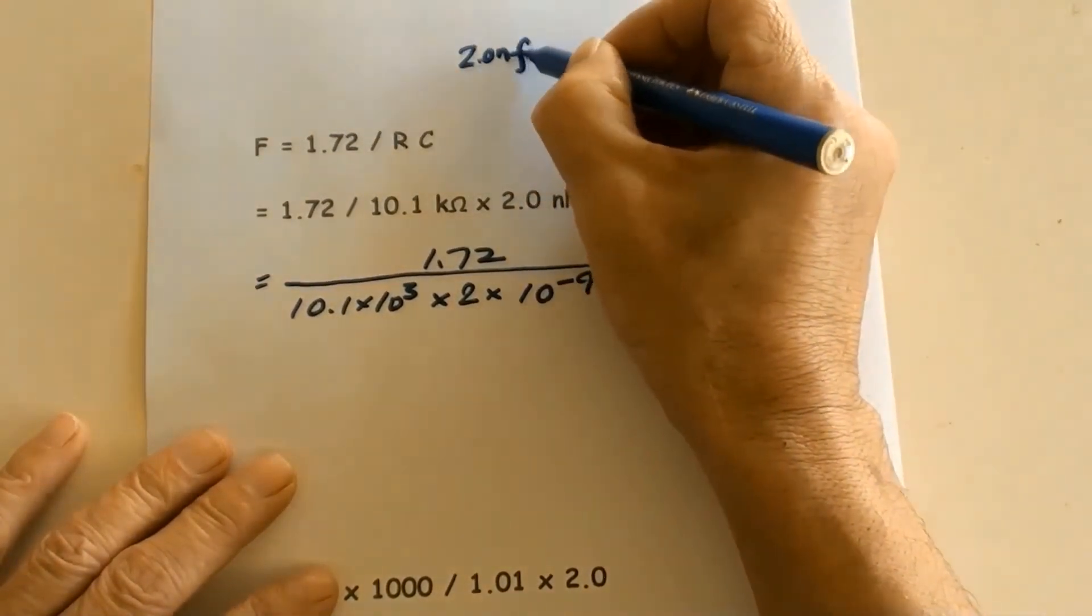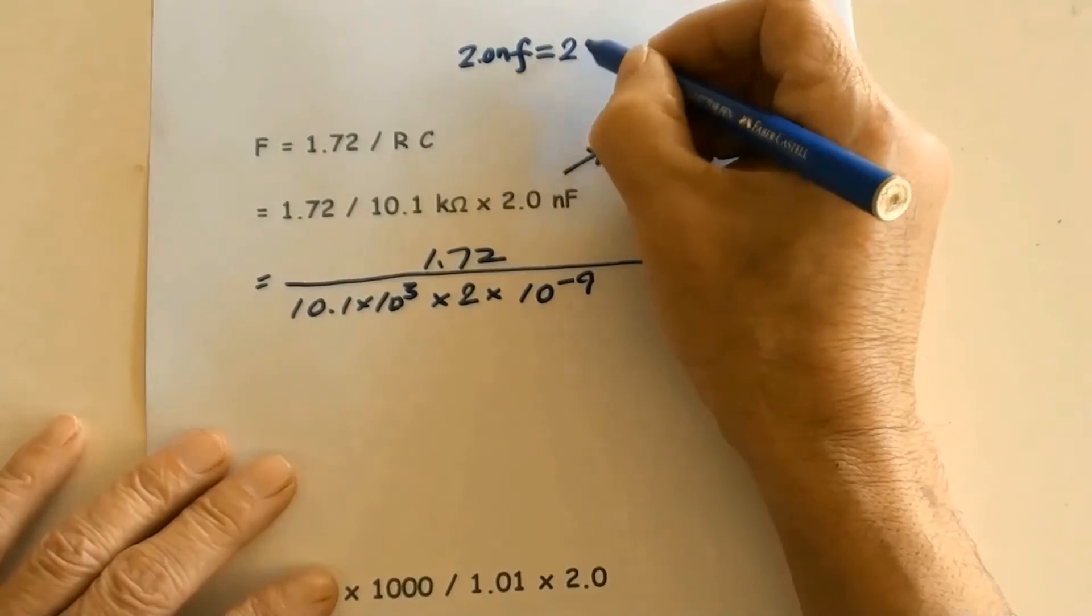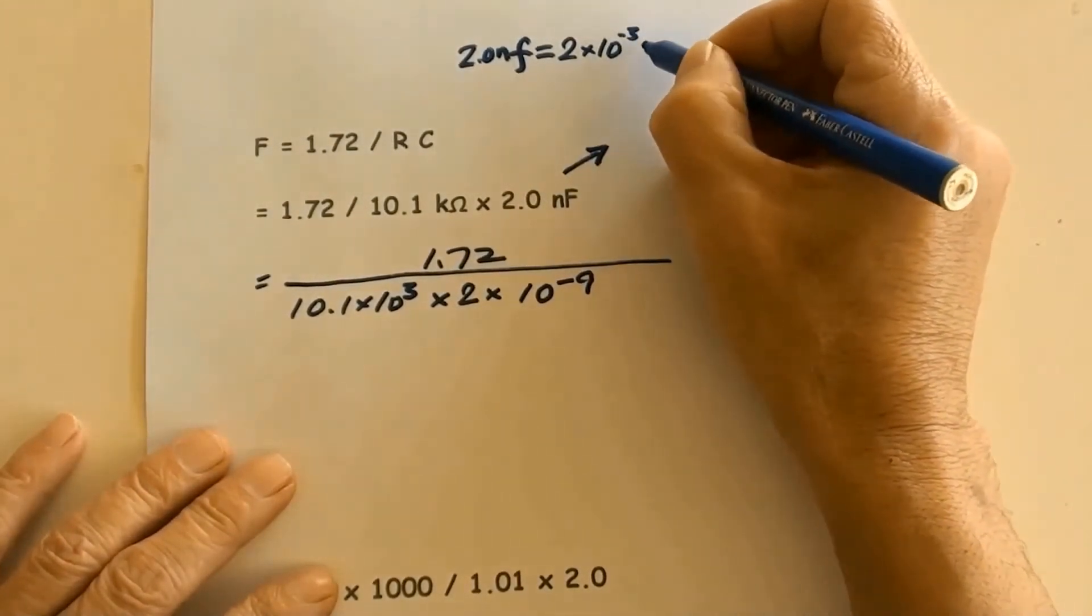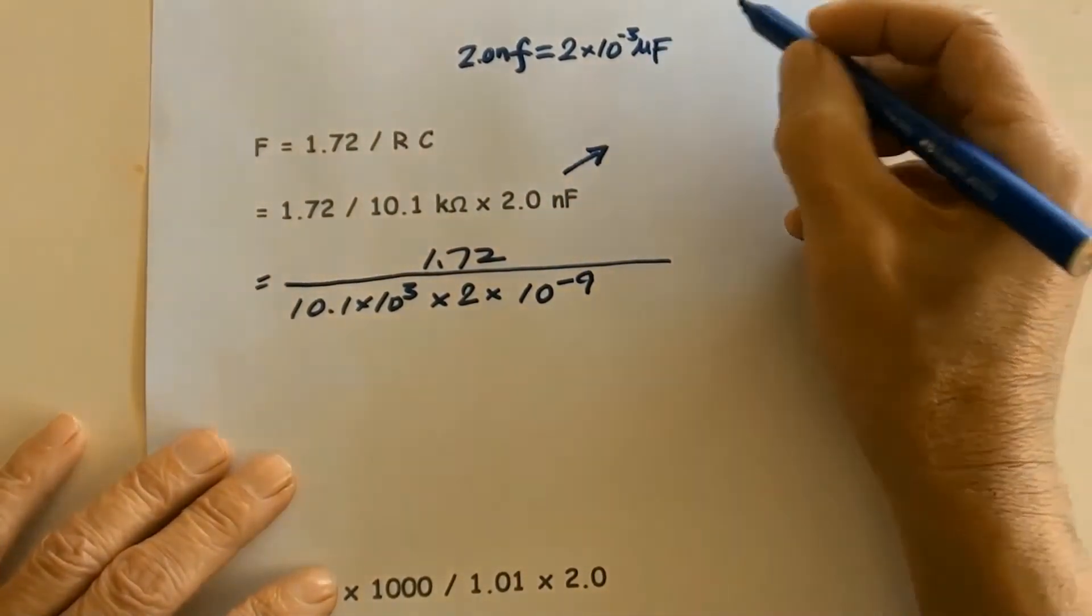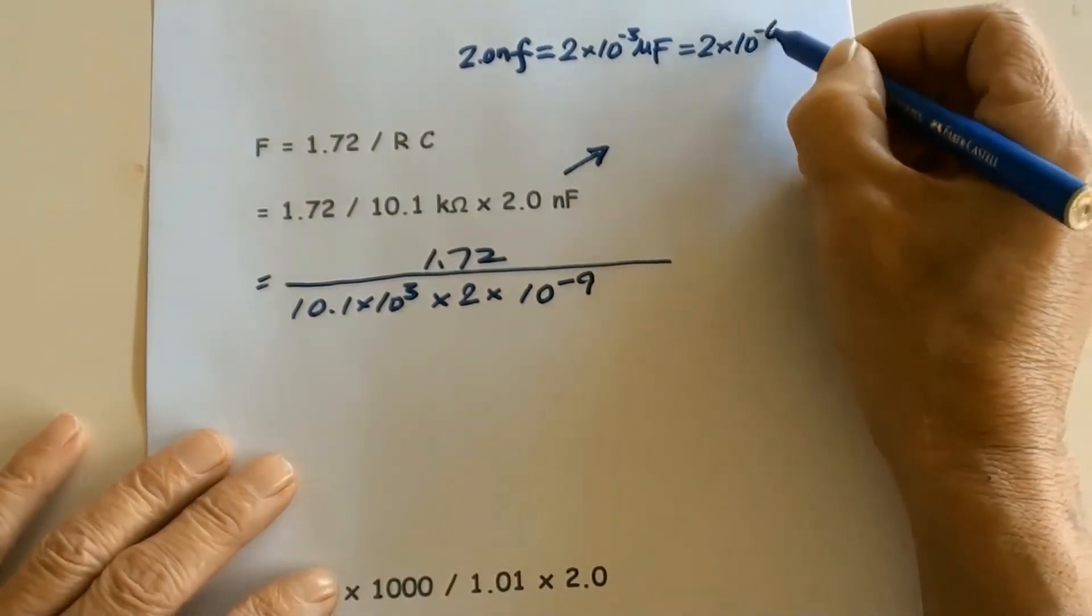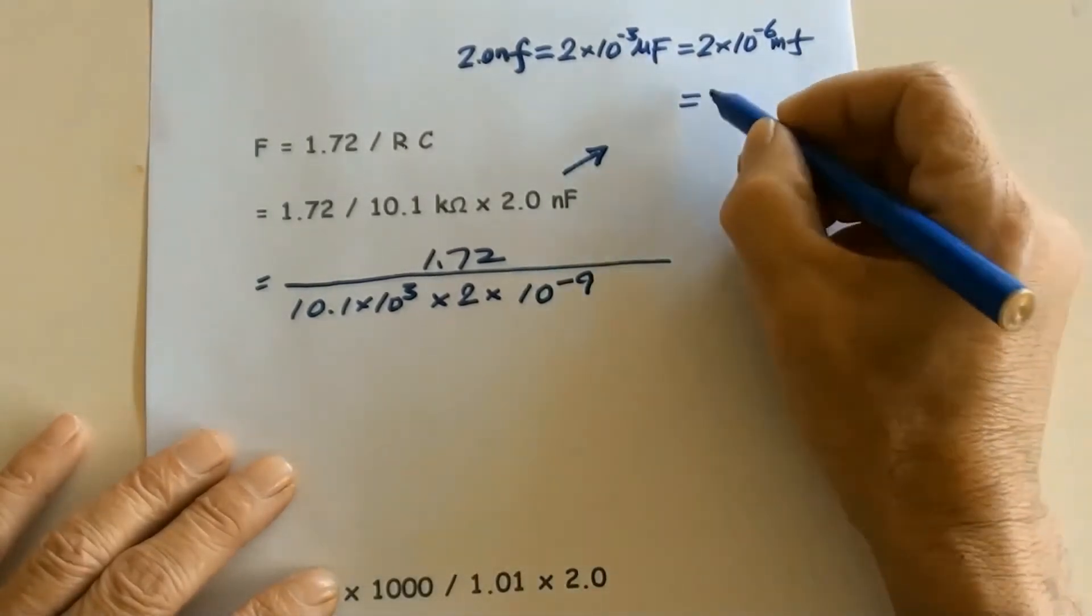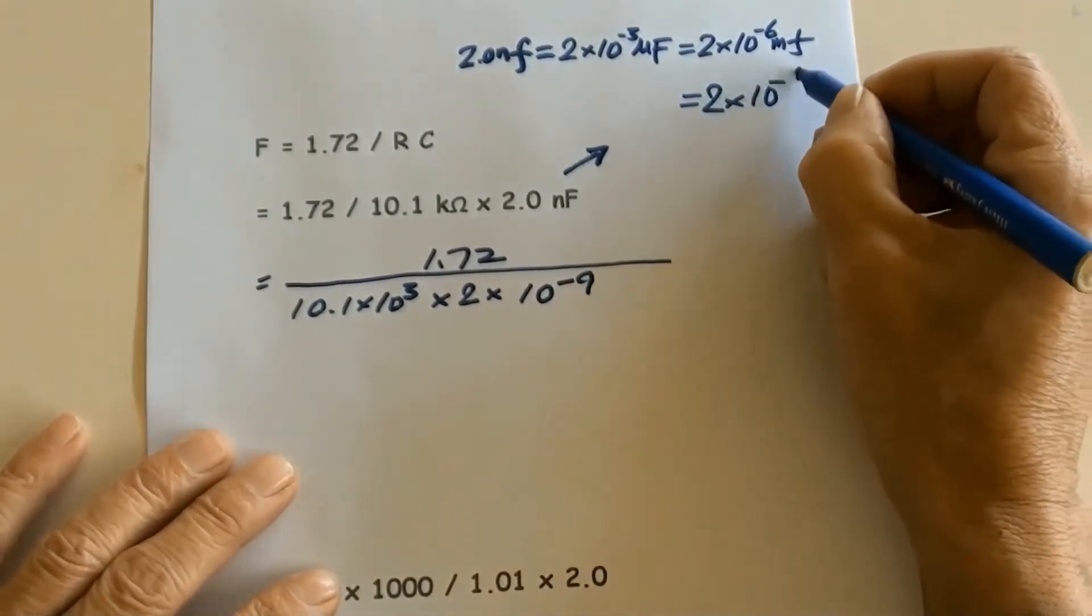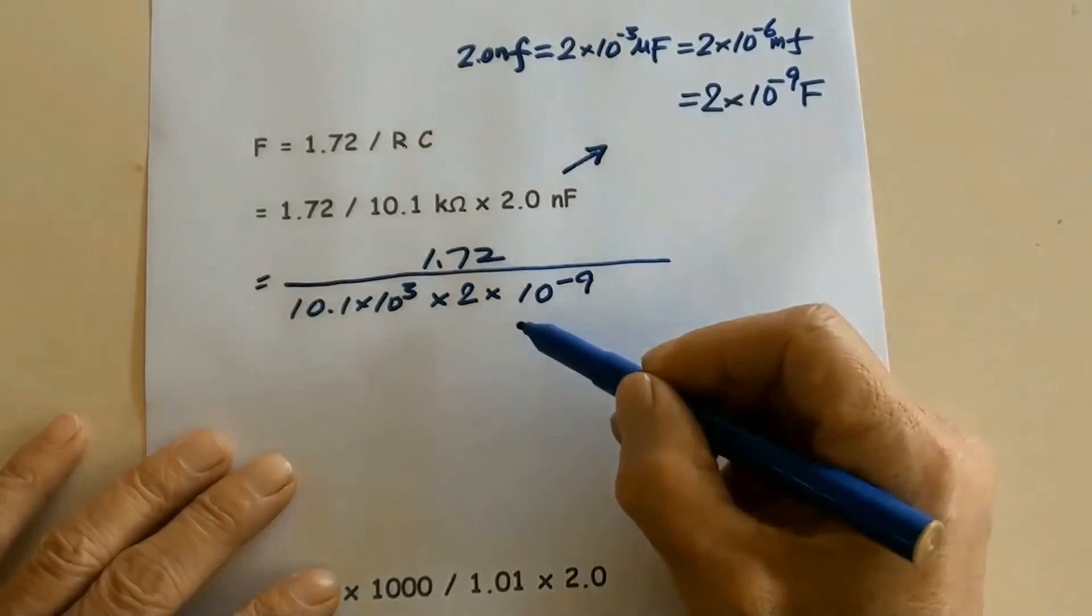That of 2nF equals 2 times 10 to the power of negative 3 microfarads. Equals 2 times 10 to the power of negative 6 millifarads. Equals 2 times 10 to the power of negative 9 farads.